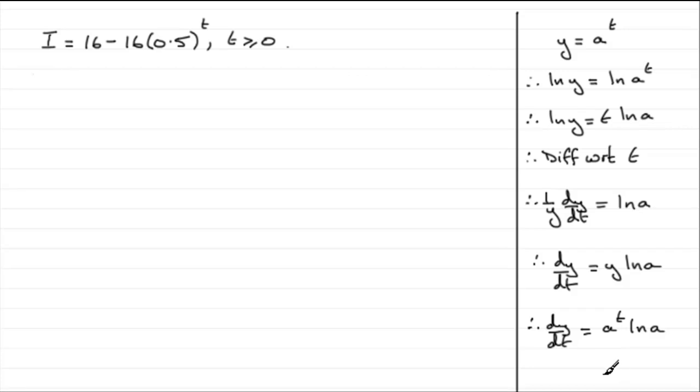So this is the difficult part, I think, of this question. The rest should be fairly straightforward, because we can differentiate this now, dI/dt. If we differentiate the constant 16, that's 0. Then we have minus 16 times the differential of 0.5 to the t. So, compared to this, the a is the 0.5. So what we get is 0.5 to the power t natural log of 0.5. So if we just write that in, we've got 0.5 to the power t times the natural log of 0.5.